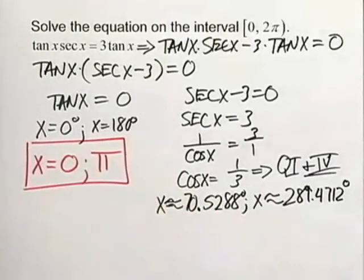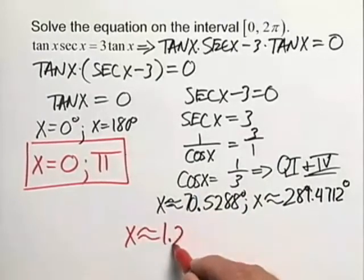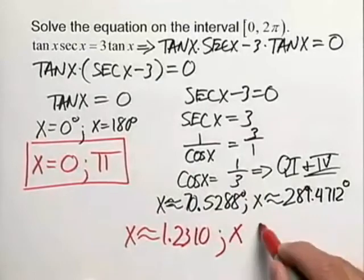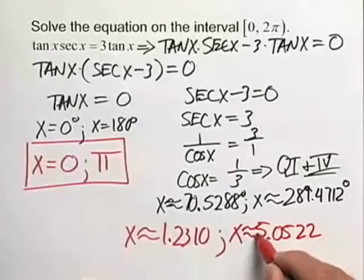Down here with our decimals it's a little bit more challenging. We're going to multiply each of those by pi over 180 and from that we'll get an approximate radian answer of 1.2310 for the first and 5.0522 approximately for our second.